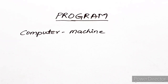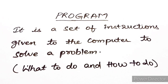Giving that kind of instruction to the computer is called a program. So what is a program? A program is a set of instructions given to the computer to solve a problem — a set of instructions to perform a particular task. It tells what the computer has to do and how it has to do it.